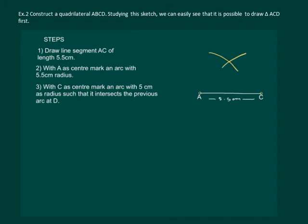Such that it intersects the previous arc at D. Join AD and CD. We have AD equal to 5.5 centimeters and CD equal to 5 centimeters.